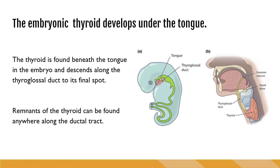The thyroid is the first endocrine gland to develop and starts about the third week of gestation — very early. It'll be fully functional by the end of the first trimester. The thyroid is found beneath the tongue in the embryo and then descends along the thyroglossal duct to its final spot in the neck. Remnants of the thyroid can be found anywhere along that ductal tract, and that's known as ectopic thyroid tissue.